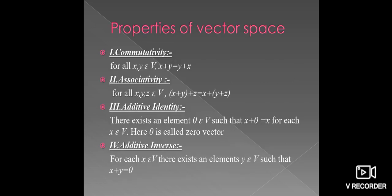Now see the properties of vector space. First, commutative: take any two elements X, Y belongs to the vector space V, that implies X plus Y equals Y plus X. Next, associative. Here we need three elements, namely X, Y, Z, and X plus Y plus Z, which is equal to X plus Y plus Z.